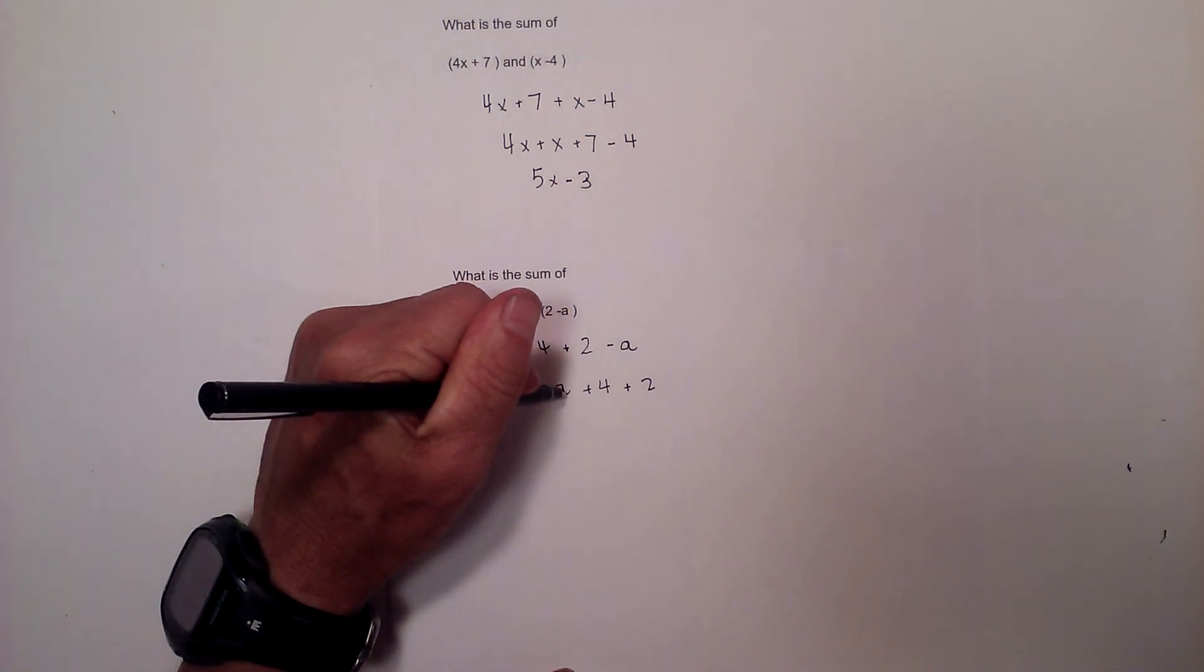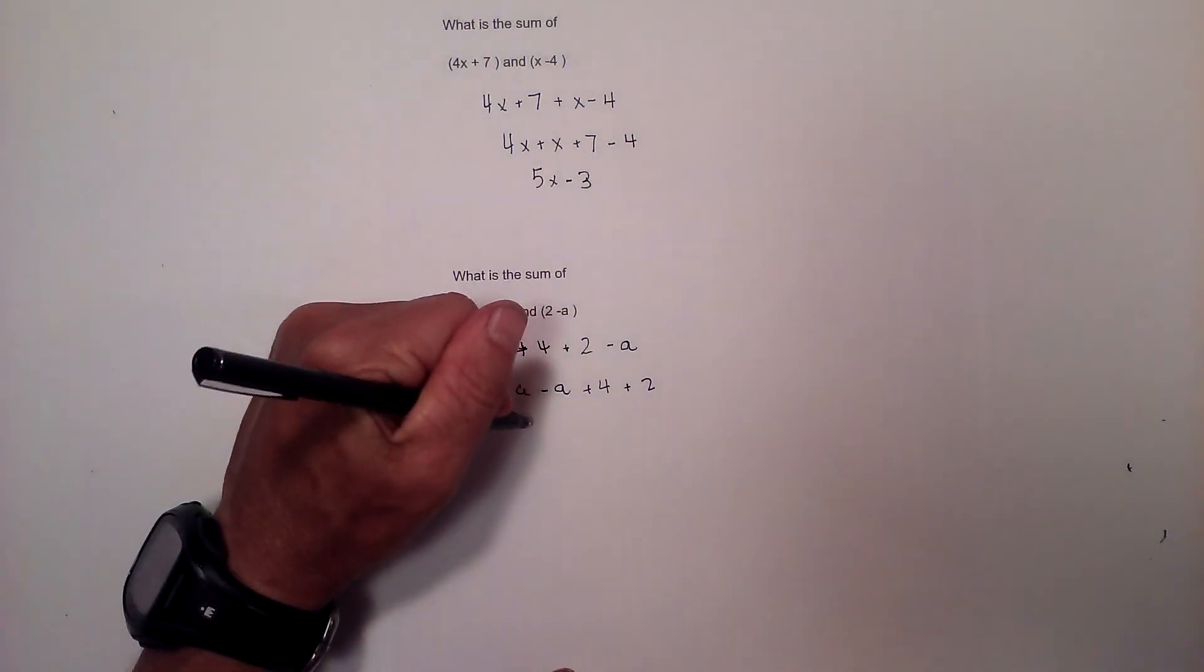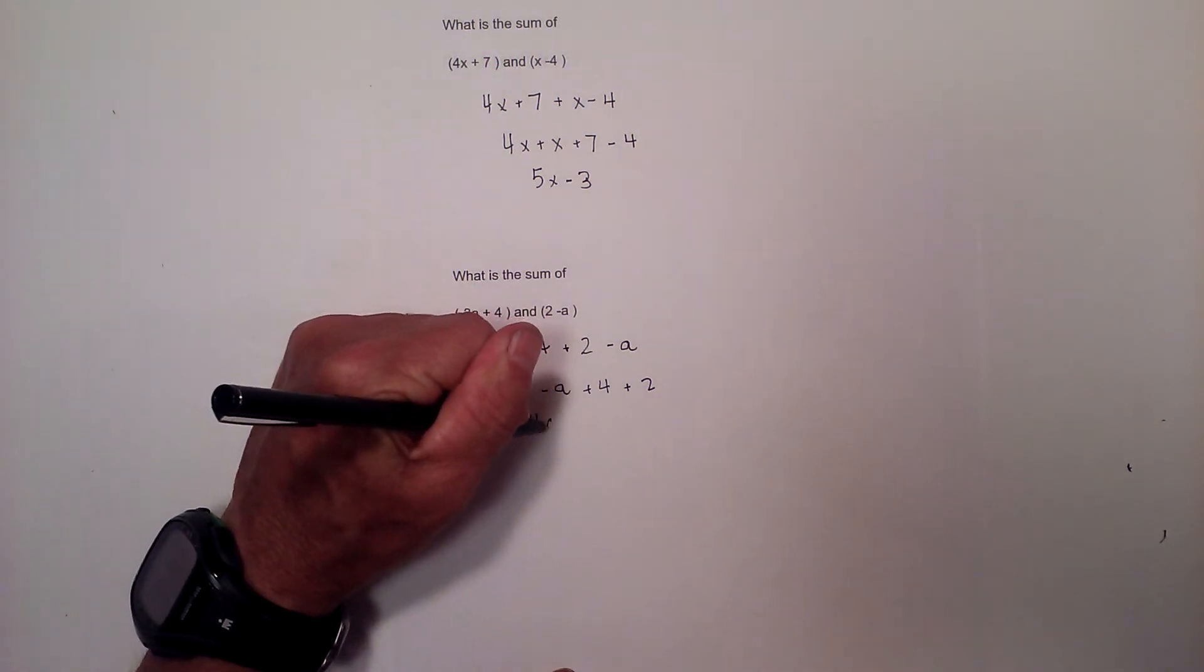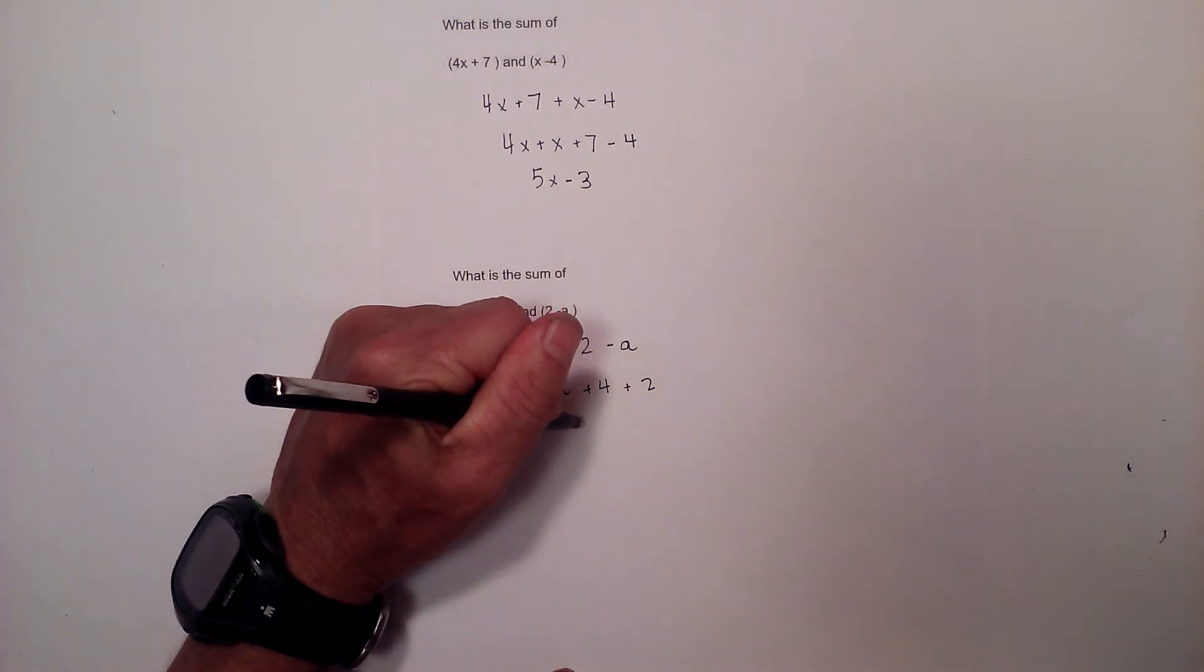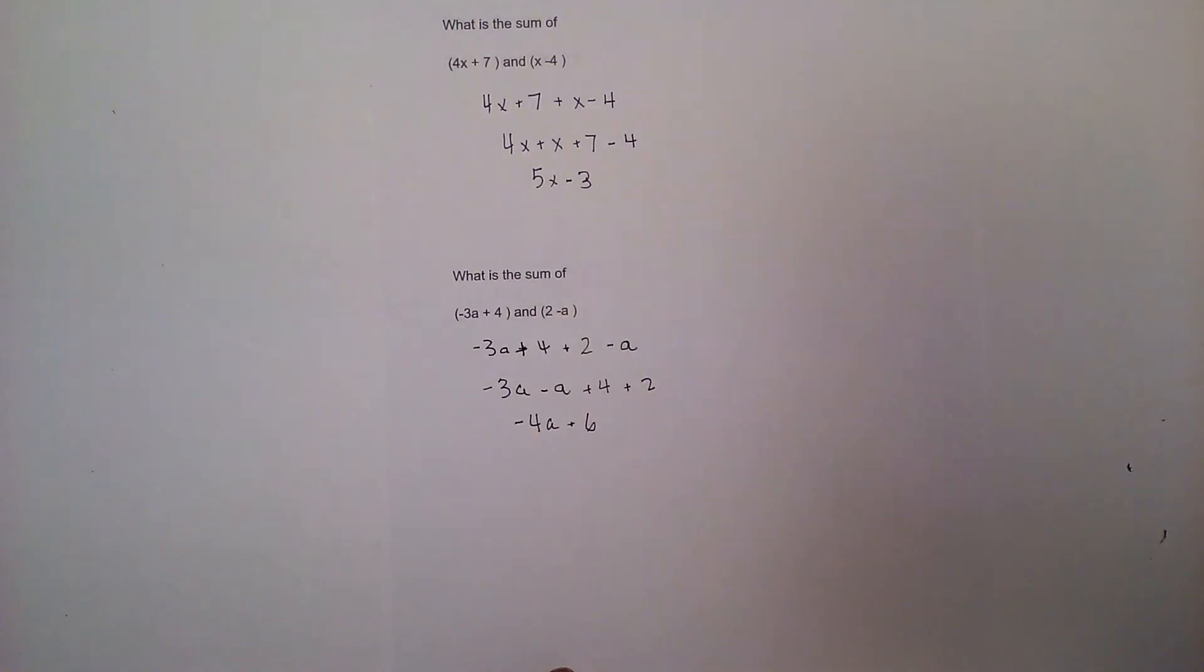So now let's go ahead and combine like terms. So a negative and a negative, you add them and take their sign, so that is negative 4a. And then we have a 4 plus a 2, so that will be positive 6.